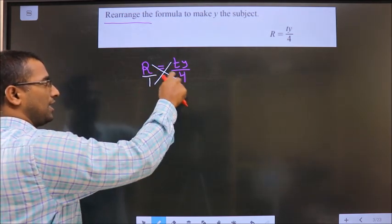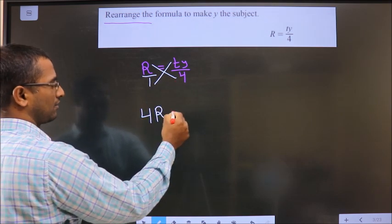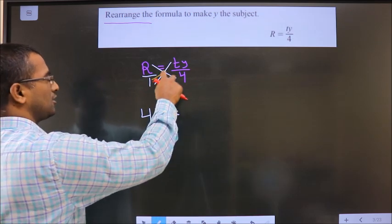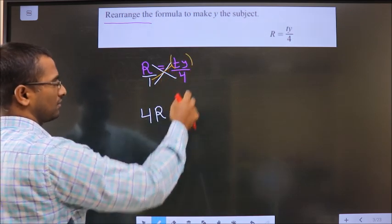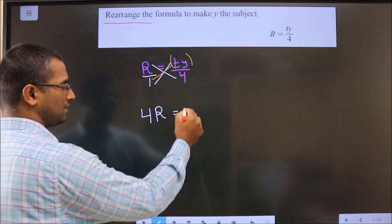r needs to be multiplied by 4, resulting in 4r. On the other side, 1 multiplied by ty equals ty. No change, so we get 4r = ty.